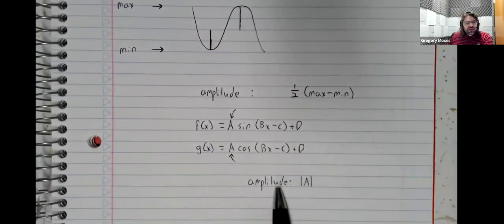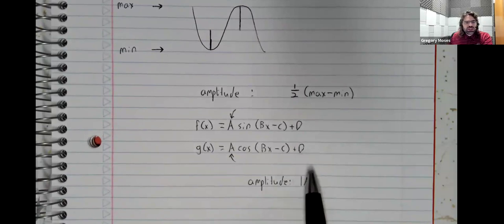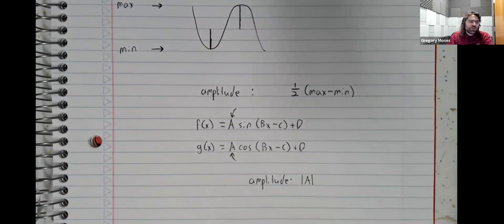Which is why this amplitude has these absolute values around the A. Whether it was positive two or negative two, the amplitude was two.